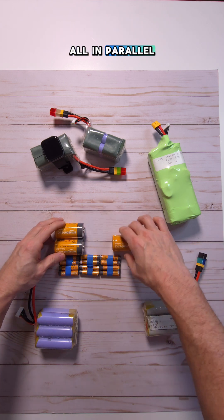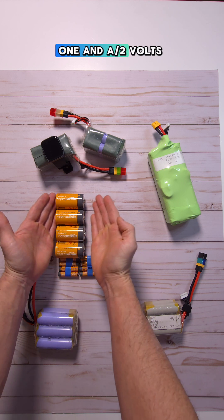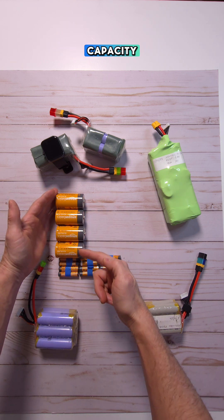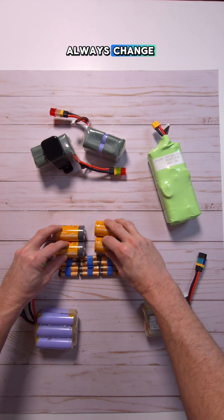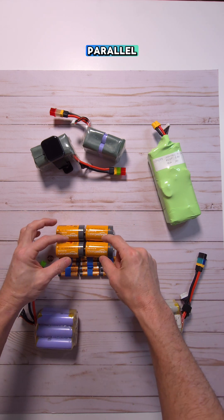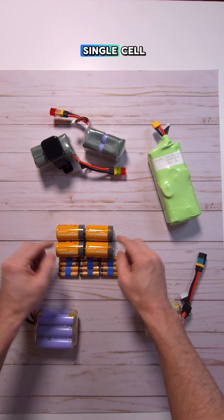However, if we put them all in parallel, now we have one in series, one and a half volts, but four in parallel. So it has four times the capacity. Likewise, we could always change that arrangement here. Now we have two in series and two in parallel. So now we have a three volt battery with double the capacity of just a single cell.